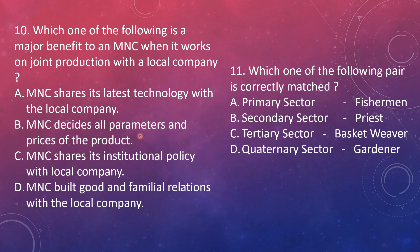All parameters means transport, toll prices, how much product should be produced, how much should be exported, how much should be imported — everything. The MNC company decides it all. The local company must do only what the MNC says in the joint production. So our answer is option B: MNC decides all parameters and prices of the product.